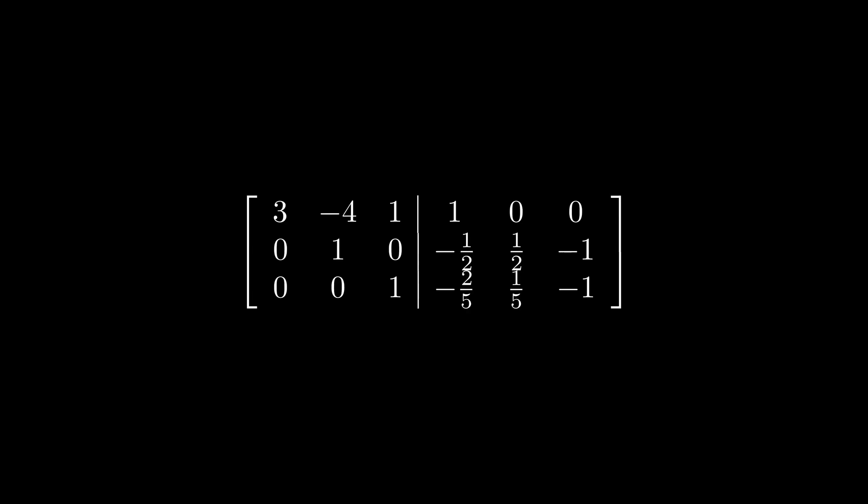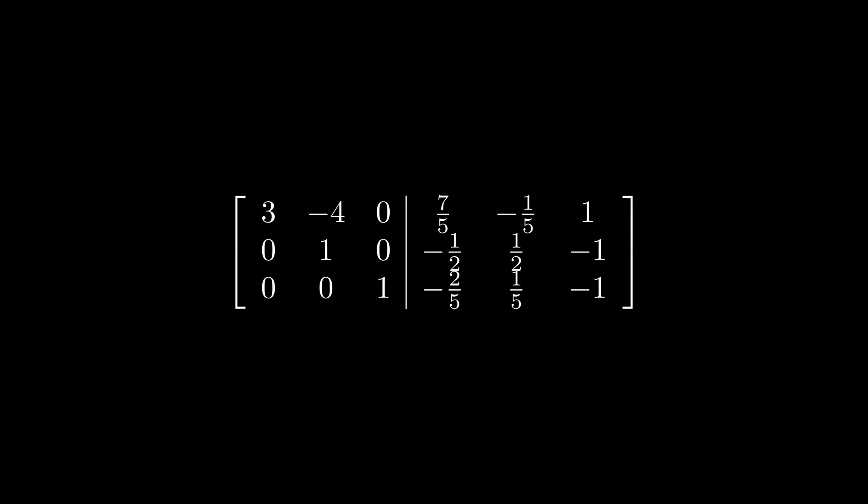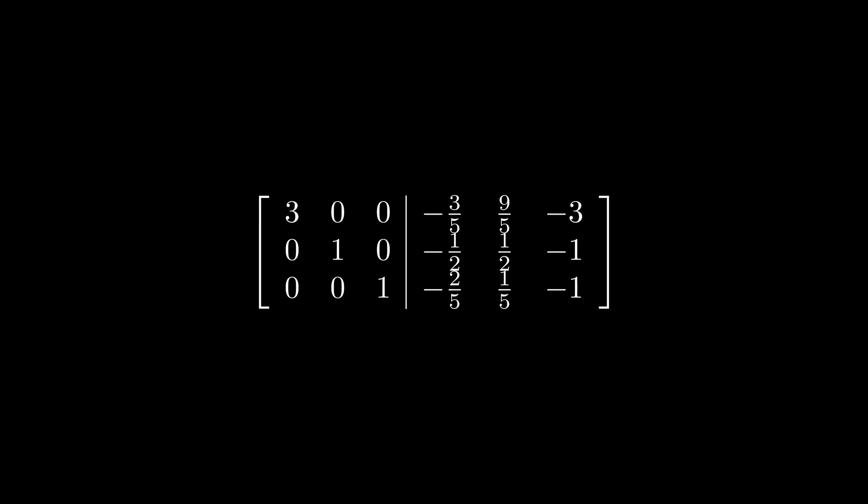We're in the home stretch. Add the bottom row to the top row, then multiply the second row by four and add it to the top row. Finally, divide the top row by three. The left side now looks exactly like the identity matrix — and this is what we want to achieve every time we do this method.